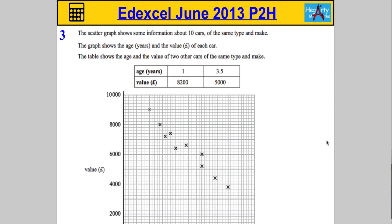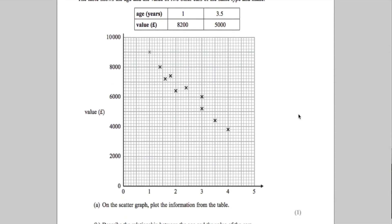Right, so question 3 says the scatter graph shows some information about 10 cars of the same type and make. The graph shows the age in years and the value in pounds of each car. The table shows the age and value of two other cars of the same type and make.